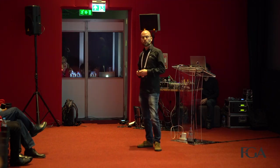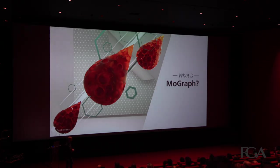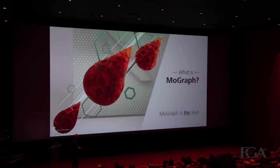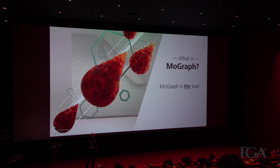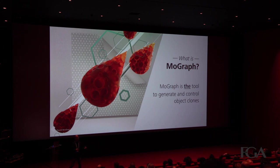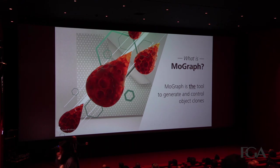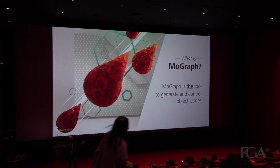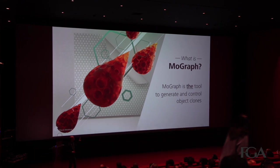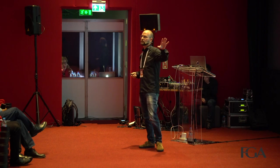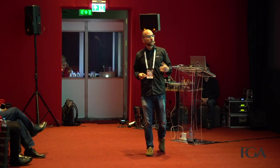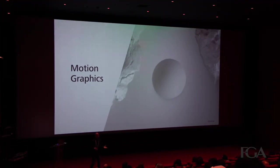There are various ways to create motion graphics. But one very special way is to use a so-called tool set inside of Cinema 4D that is called MoGraph. What is MoGraph? It's the tool especially when it comes to generating and controlling object clones. Whenever you have a huge amount of objects inside of your scene, MoGraph is the way to go.